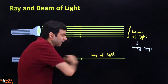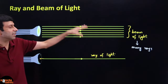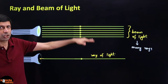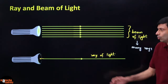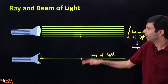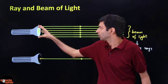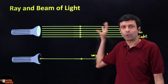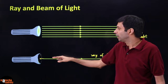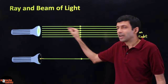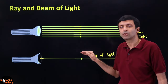Light travels in a straight line in one medium — this is called rectilinear propagation of light. A ray is a thin line of light, and a beam is a collection of many rays. When you have a light source you have a beam, but we consider individual rays — for example, the top and bottom rays of a beam — to make diagrams easier.